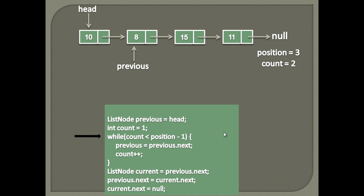This signifies that the previous node has reached the second node, from where we can delete the third node, that is the position node.